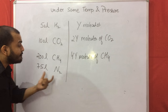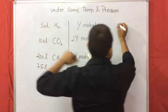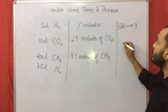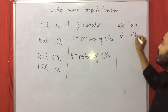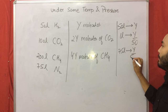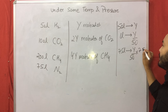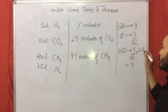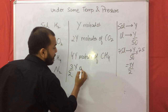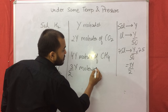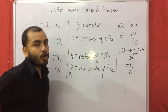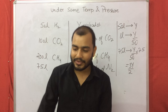For 75 litres of nitrogen, apply the unitary method: 50 litres contain Y molecules, so 1 litre contains Y/50 molecules, and 75 litres will contain (Y/50) × 75 = 3Y/2 molecules of nitrogen. This was all from Avogadro's Hypothesis. Thank you.